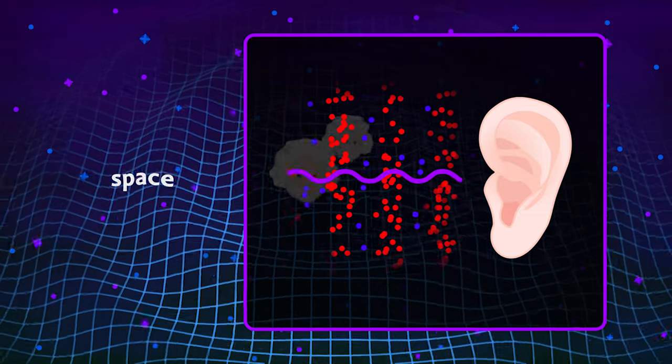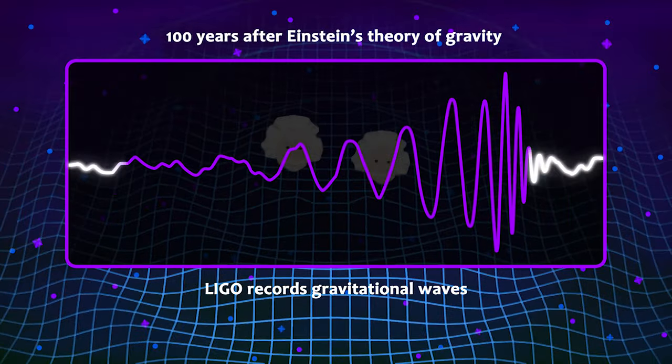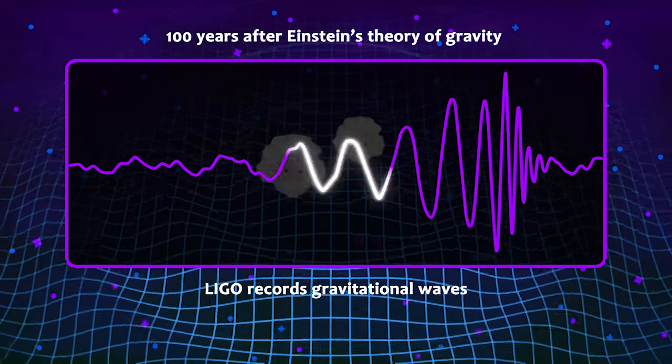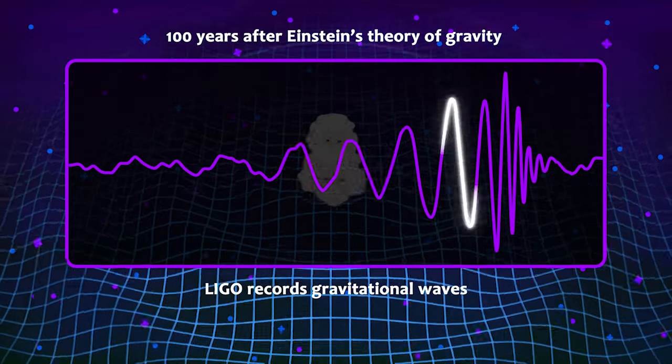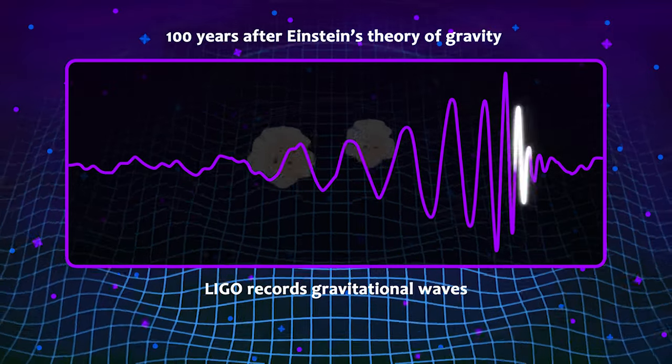So what was this epochal discovery made in 2015? It was on the 14th of September when the LIGO scientific collaboration, for the first time in history, directly recorded gravitational waves produced by two black holes.